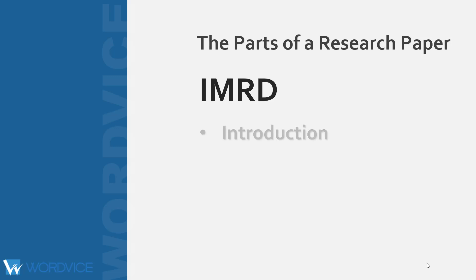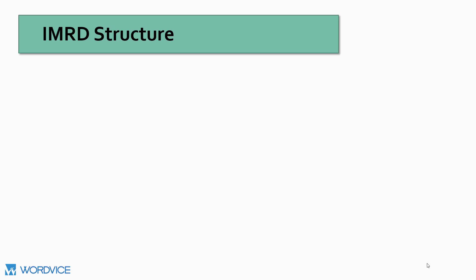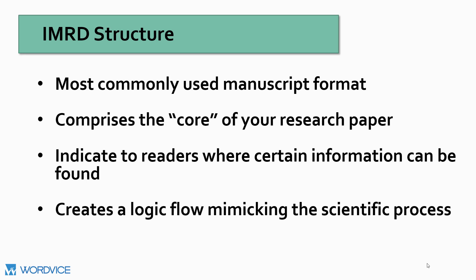These are the introduction, methods and materials, results, and discussion sections. This manuscript formatting is the most commonly used by journals and academic bodies, and these parts compose the core of your research paper, indicating to readers where certain types of information can be found, and providing a logical flow that mimics the basic structure of the scientific process.